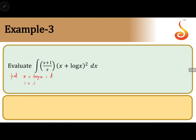Differentiating, 1 plus 1/x into dx equals dt. Taking LCM, (x + 1/x) into dx equals dt. Therefore the given integral reduces to the integral of (x + 1/x) into dx over (x + log x) squared, where (x + 1/x) dx is replaced by dt.